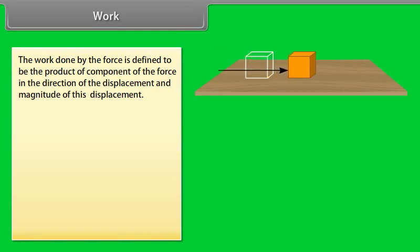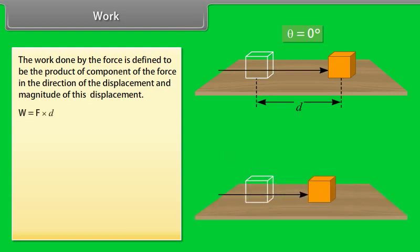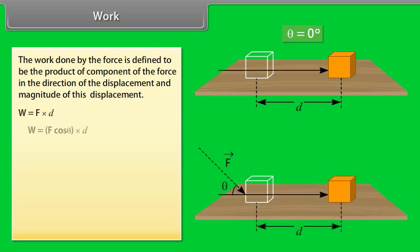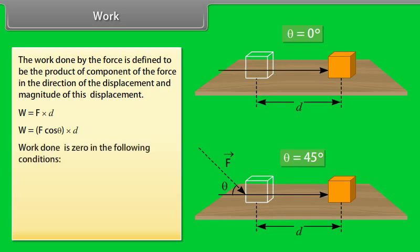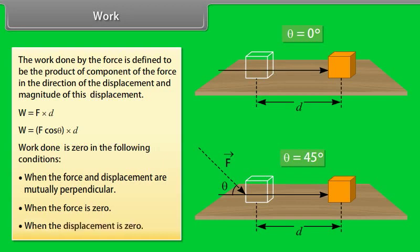The work done by the force is defined to be the product of component of the force in the direction of the displacement and magnitude of this displacement. W is equal to F into D. W is equal to F cos theta into D. Work done is 0 in the following conditions: When the force and displacement are mutually perpendicular, when the force is 0, when the displacement is 0.